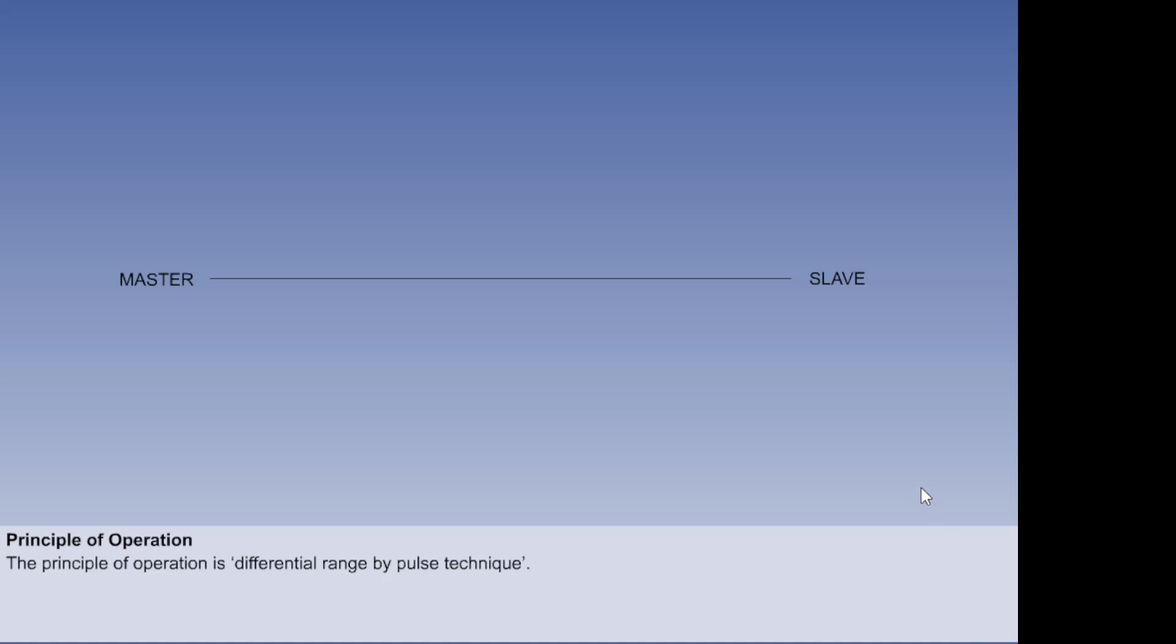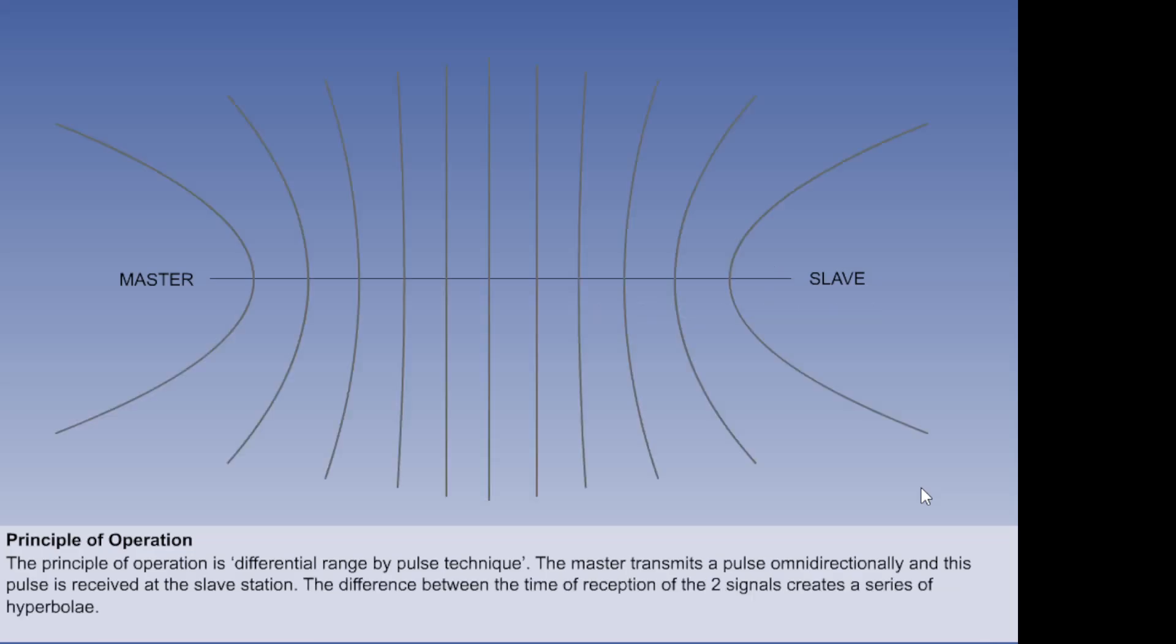The principle of operation is differential range by pulse technique. Let's look at the arrangement of a master and slave transmitter with a line joining them, called a baseline. The master transmits a pulse omnidirectionally, and this pulse is received a short time later at the slave station. The reception of this master pulse triggers the slave to transmit a pulse of its own, also omnidirectionally, but only after a fixed time delay.